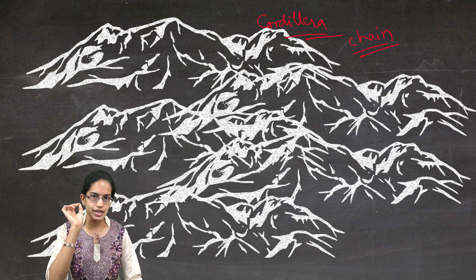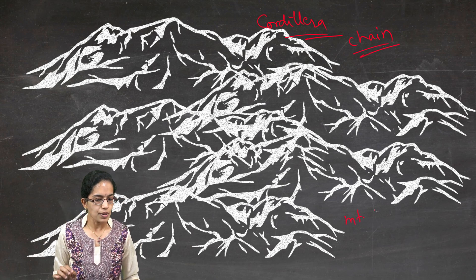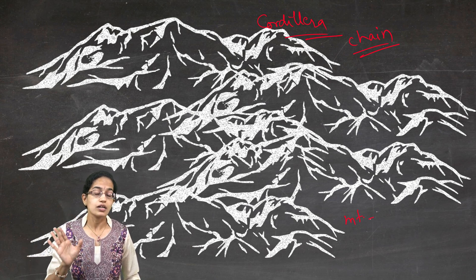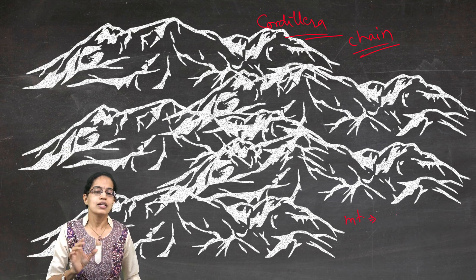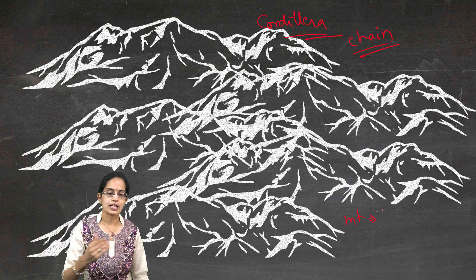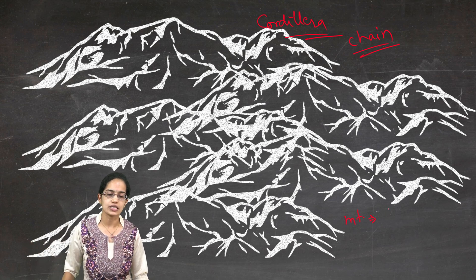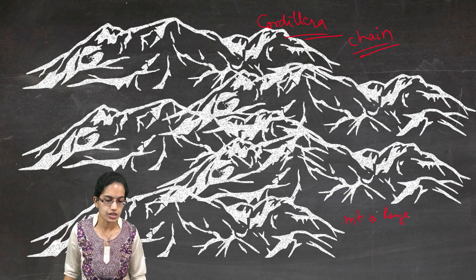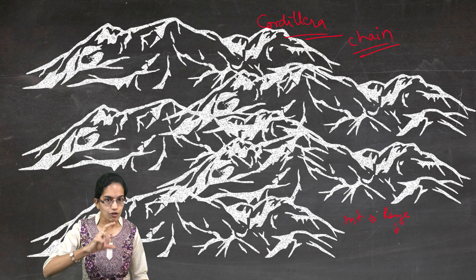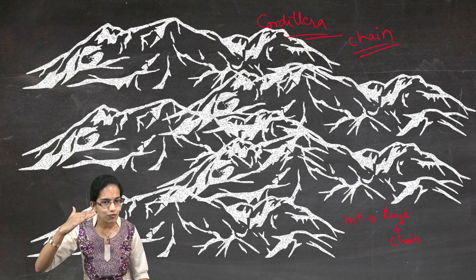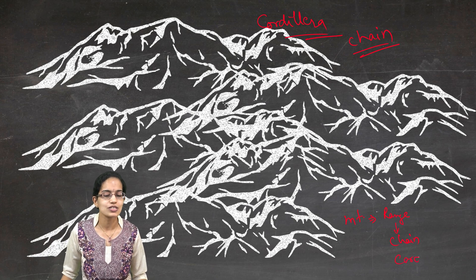Just a quick recap: single mountain, we understood the definition difference between a mountain and a hill. Then together when there are mountains in a proper alignment with a similar form and structure, we call them as mountain range. A set of mountain range is known as mountain chain, and a set of mountain chain would be known as cordilleras.